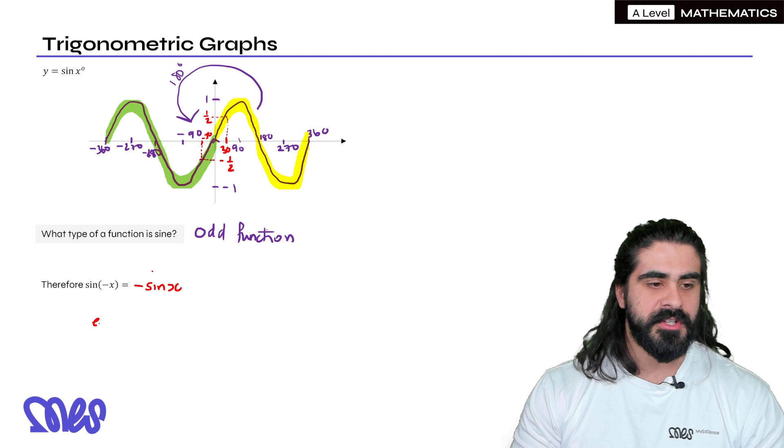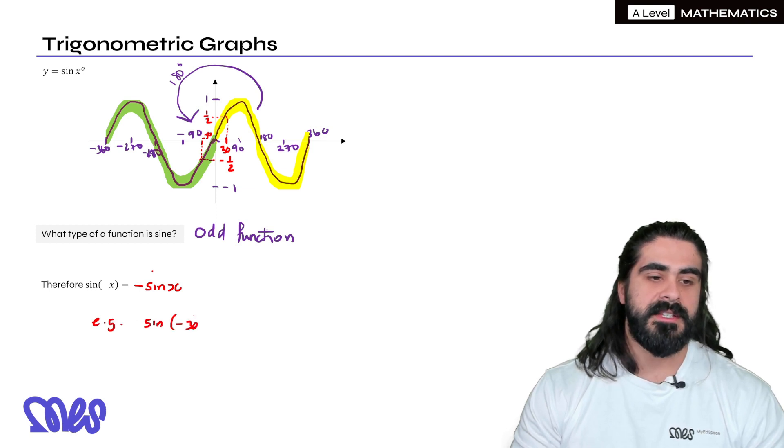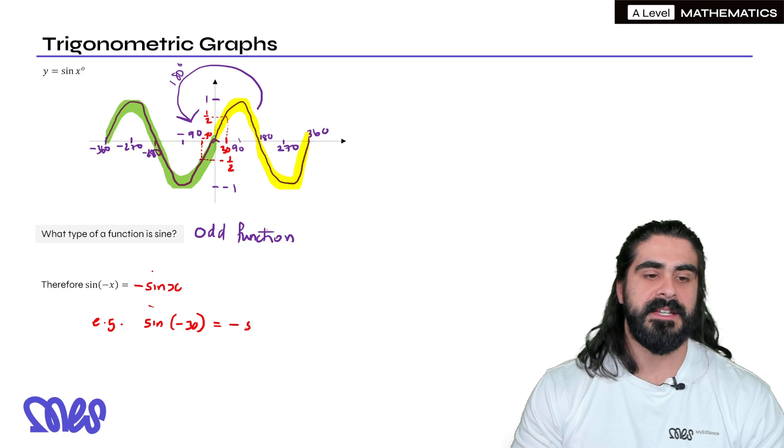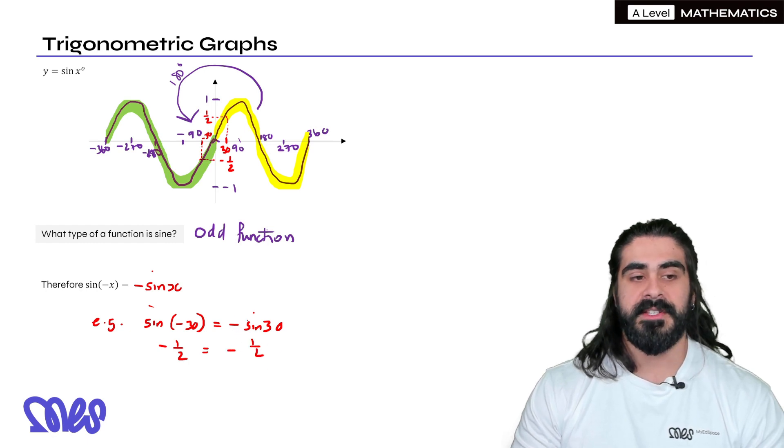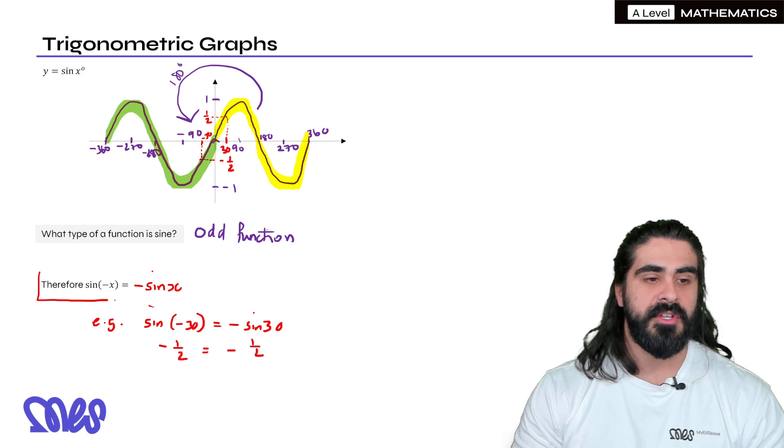And that's the definition, basically, of an odd function. So if you do sine of a negative number, it's just the exact same as the positive, just the negative of that. For example, sine of minus 30 is just the same as the negative of sine 30. Sine of minus 30 is minus a half, and here you have the negative sine of 30 is a half. So you can see it's true. So this is something that you do want to remember, what an odd function is.